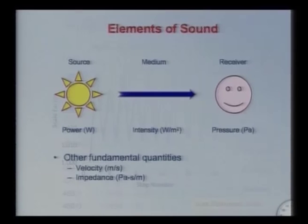Sound intensity is a vector — it is sound energy transmitted per unit area normal to the direction of transmission. Integrating intensity over a sphere gives back the source power in watts, assuming minimal dissipation. Sound intensity is also called sound energy flux density or sound power density. Other fundamental quantities include particle velocity in meters per second and impedance, which is analogous to electrical impedance.